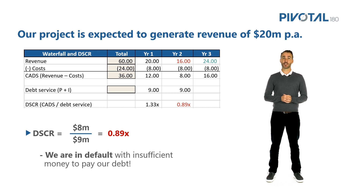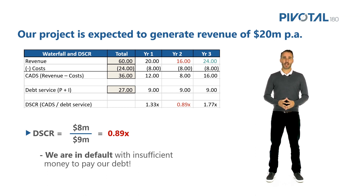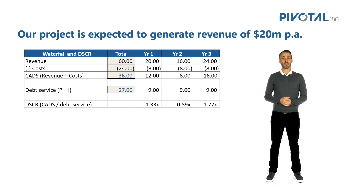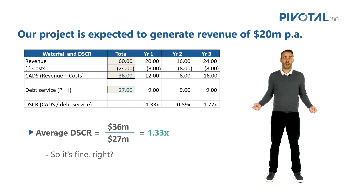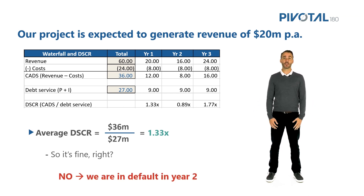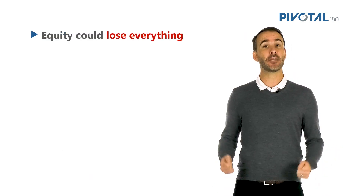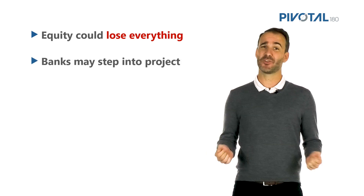In year three, our DSCR has gone up to 1.77, as we now have $16 million of CADs and only $9 million of debt service. But we still have a problem — we go into default in year two, even though we bounce back in year three. Our average DSCR is $36 million divided by $27 million, the total CADs over total debt service, which equals 1.33. Because our average is okay, does that mean the project is fine? No. A short-term cash flow problem has caused our project to go into default. Equity could lose everything, and the banks may have to step into the project. This isn't a good situation for anyone.